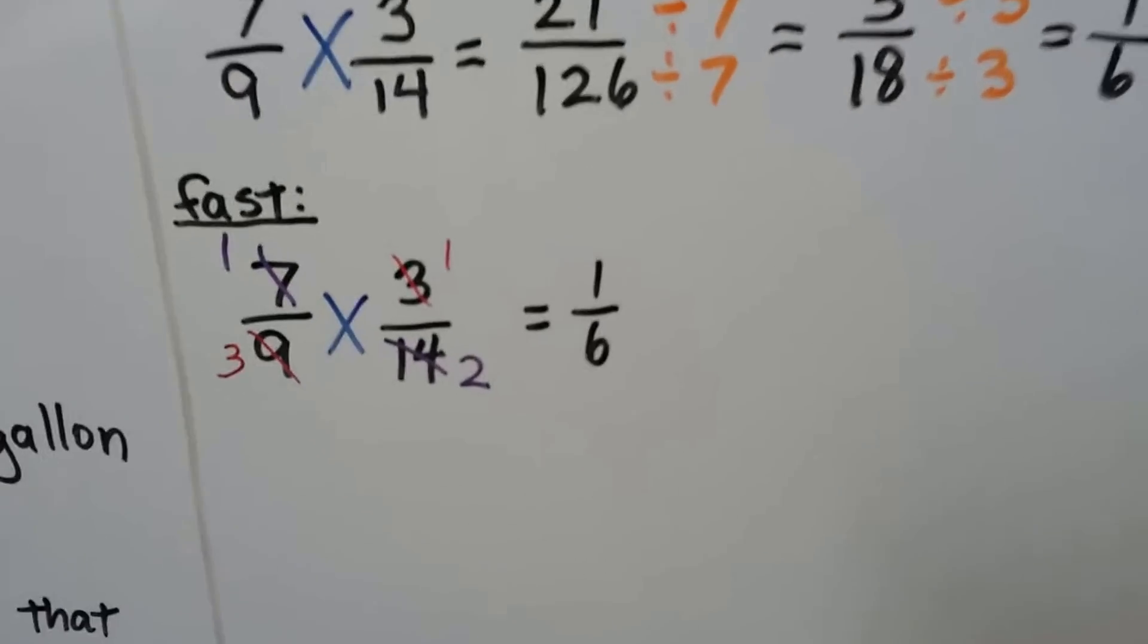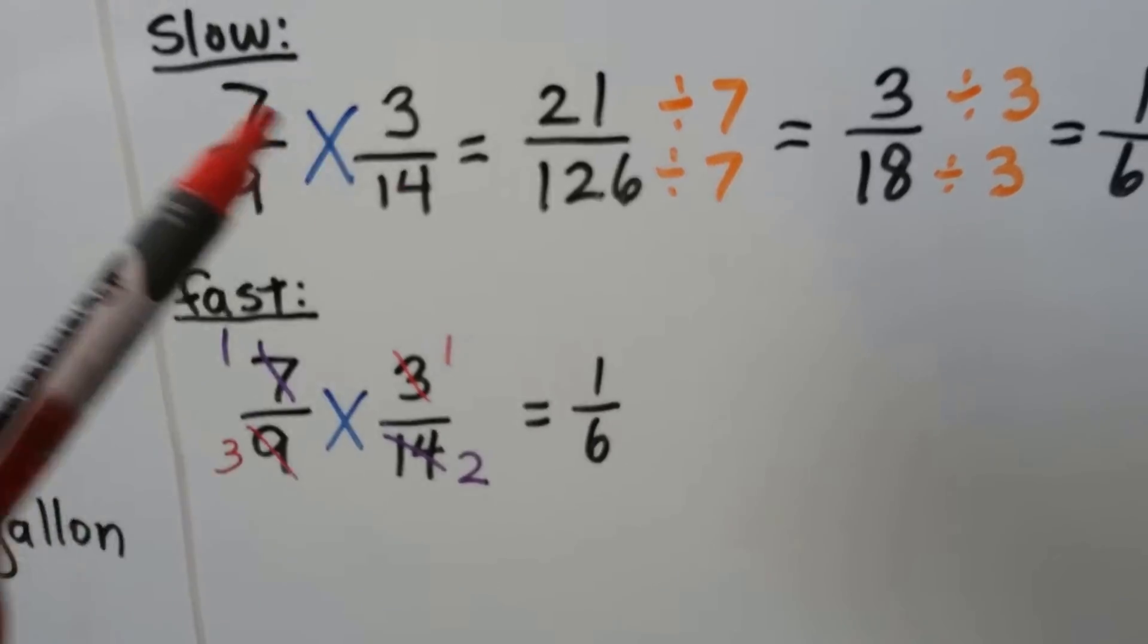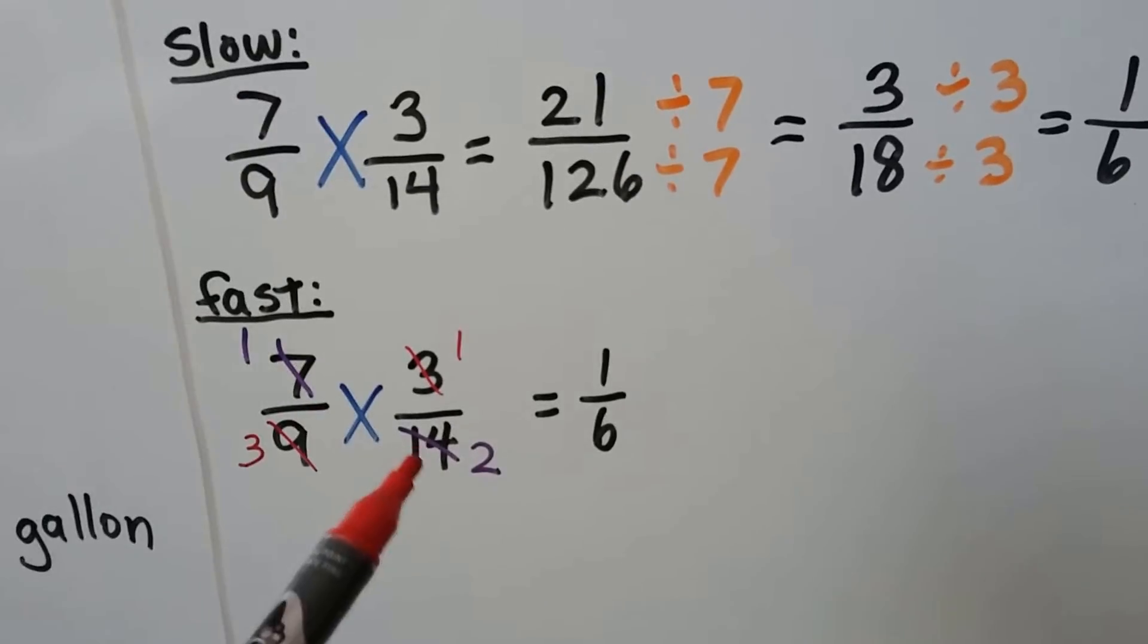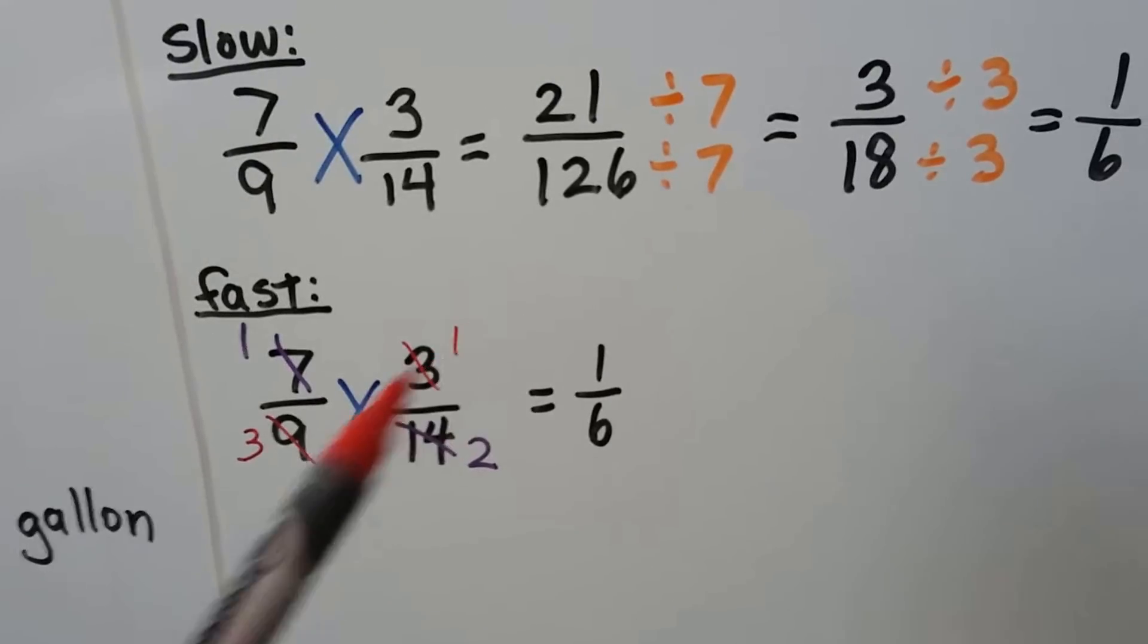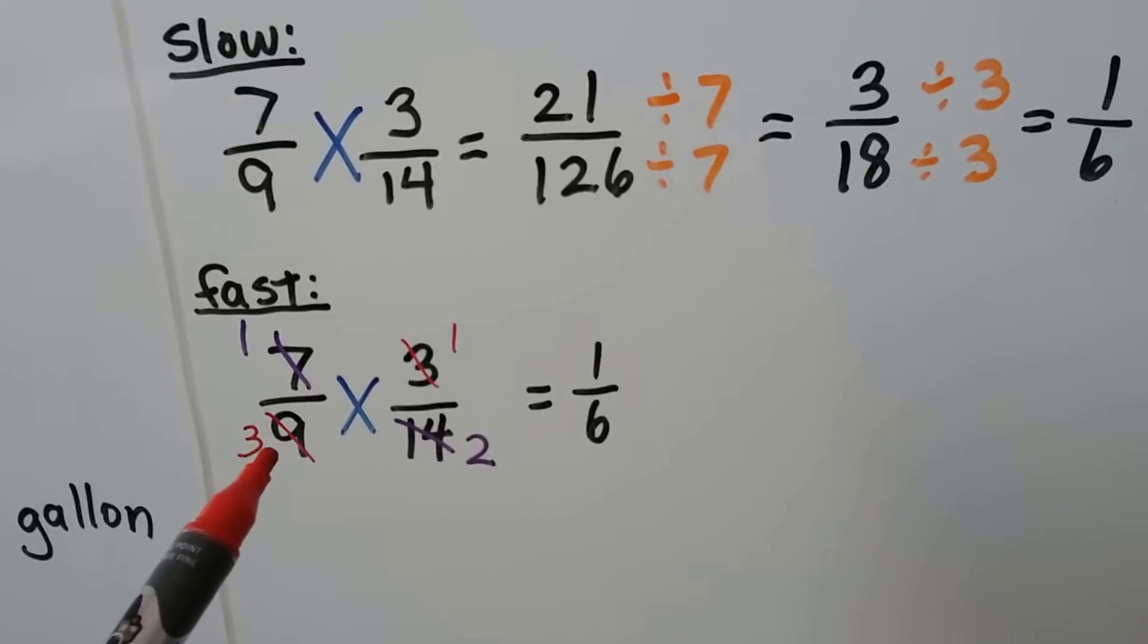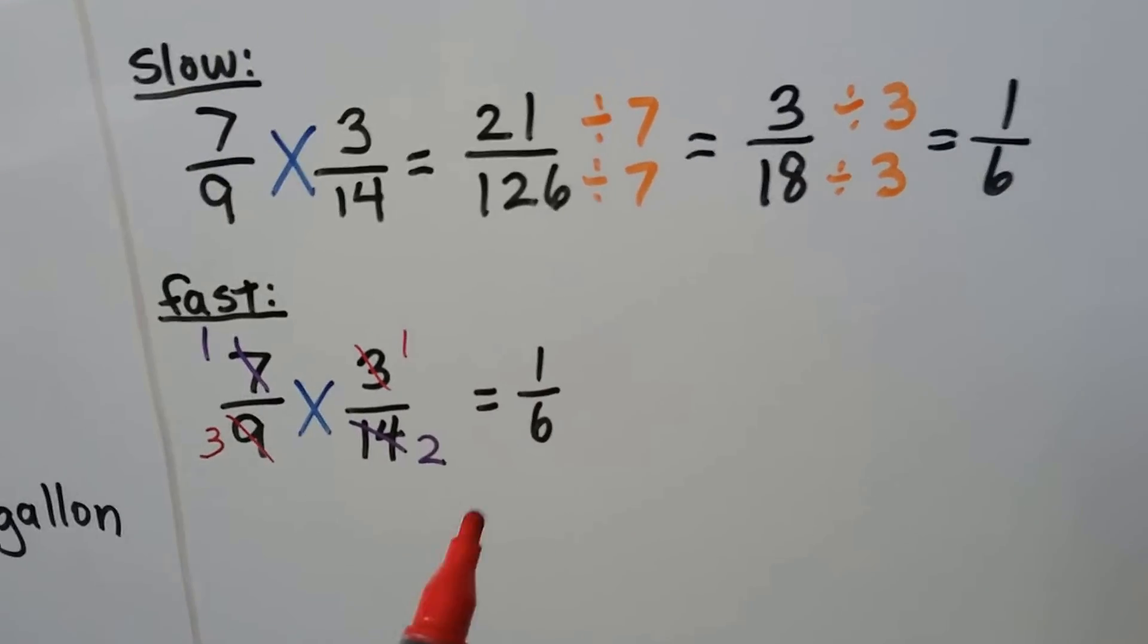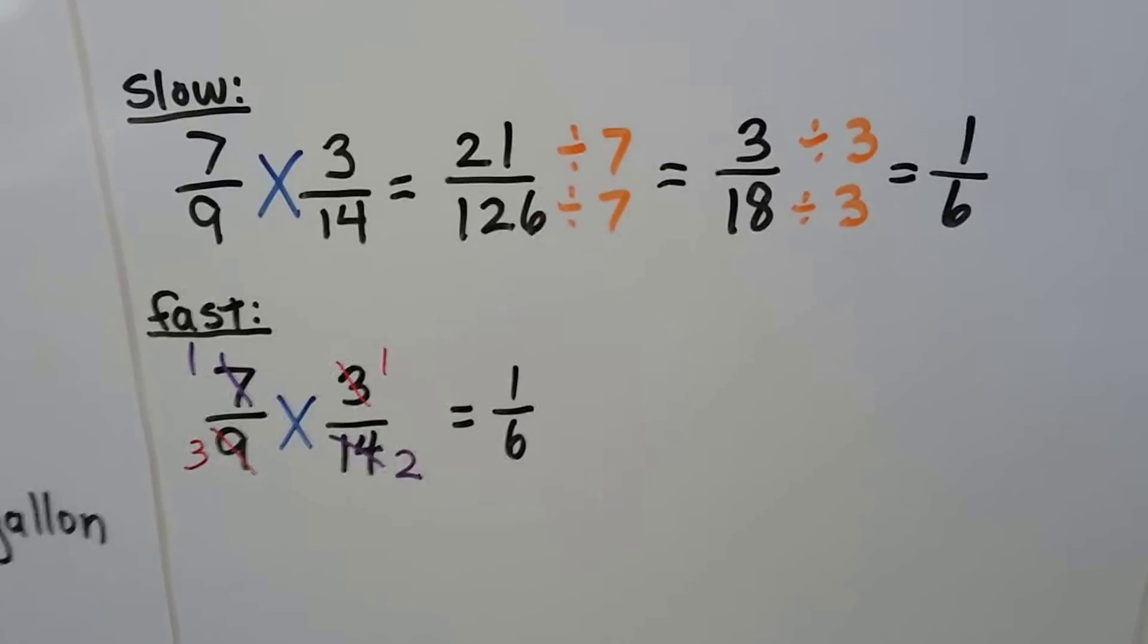If we had done cross-canceling, we could have looked at this and said, well, look, we have a 7 and a 14. There's one 7 in 7 and two 7s in 14. So we can cross this out and make it a 1 and cross the 14 out and make it a 2. And we could do the same thing going this direction with the 3 and the 9. There's one 3 in 3 and there's three 3s in 9. Now we do 1 times 1 is 1 and 3 times 2 is 6. And by cross-canceling, we didn't have to do all this reducing. We went straight to the answer.